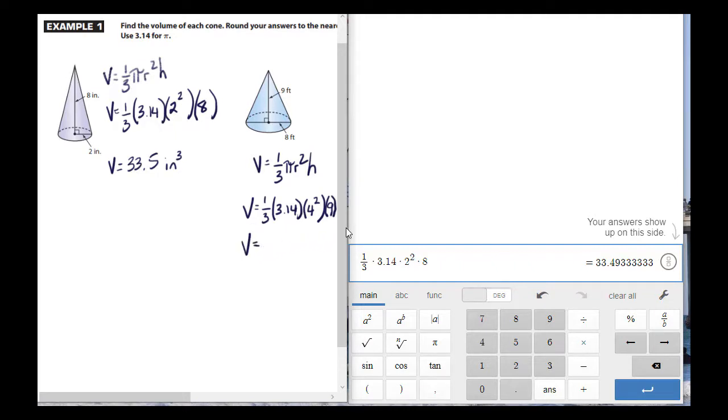So if you come over here to the calculator, I'm going to just change that 8 to a 9, and I'm going to change the radius. That's all I have to change. The one-third and the π are going to stay the same. The radius on this one is 4, and so there's one-third times 3.14 times 4 squared times 9, and the volume is 150.7 cubic feet.